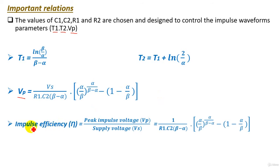Also, there is an important parameter, which is the impulse efficiency. Impulse efficiency here describes the performance of our impulse generator. Impulse efficiency equals the peak impulse voltage Vp over the supply voltage. So these are the important parameters of our impulse generator or our impulse voltage waveform, which are T1 the rise time, T2 the tail time, and the peak voltage here.